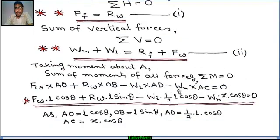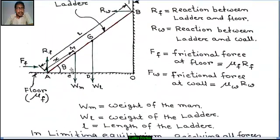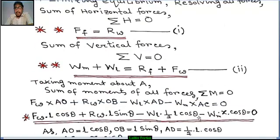Next, minus WM × AC. This is the weight of the man. Distance from A is AC. This is a moment in the clockwise direction, so it is negative. So: FW × AO + RW × OB − WL × AD − WM × AC = 0.